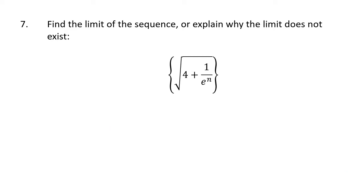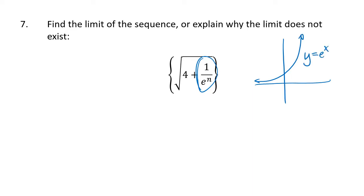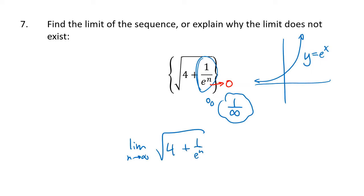What about something like the square root of 4 plus 1 over e to the n? It looks complicated, but break it down. Look inside that square root and ask what happens as n gets bigger. The 4 stays as 4. But 1 divided by e to the n — we know e to the x goes off to infinity as x grows, so 1 divided by a number getting bigger and bigger goes to 0. So the limit of the square root of 4 plus 1 over e to the n is just the square root of 4 plus 0, which is the square root of 4, which is 2.